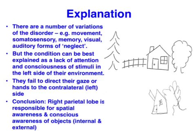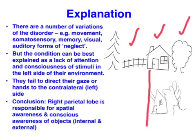For instance, for this image on the right, a patient was asked to describe what they saw before drawing it. They said they saw a fence, a house, and a tree. Then they were asked to draw it, and they only drew the right side of the image. When asked again what they had originally seen, they said they saw a house and a tree — they were no longer aware of the left side of that image. But if their attention was directed that way, then they could attend to stimuli on the left side of their environment.